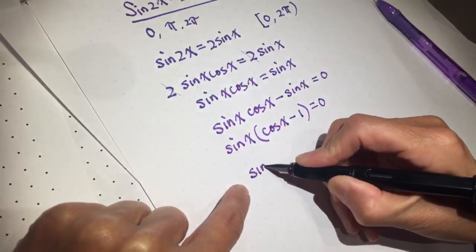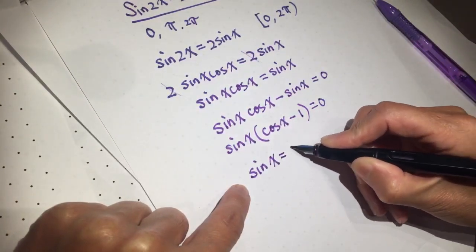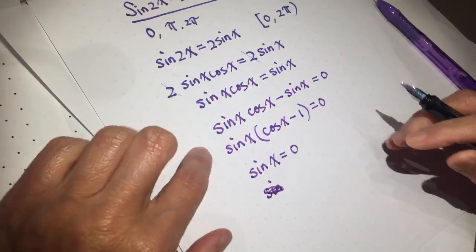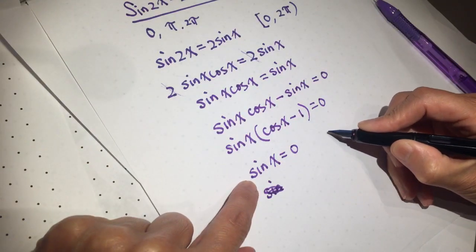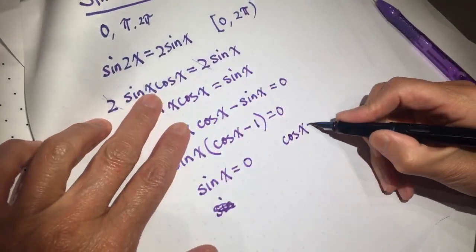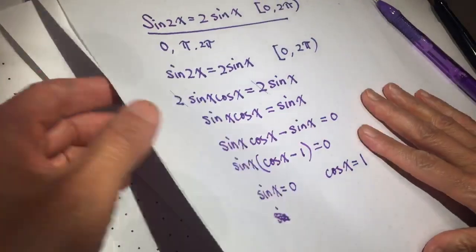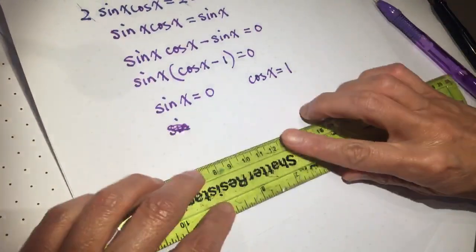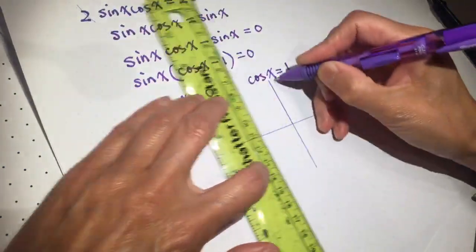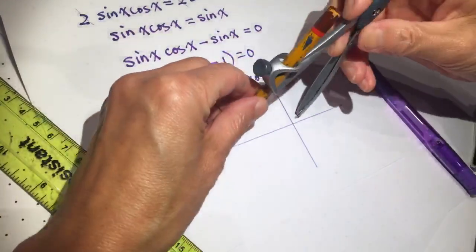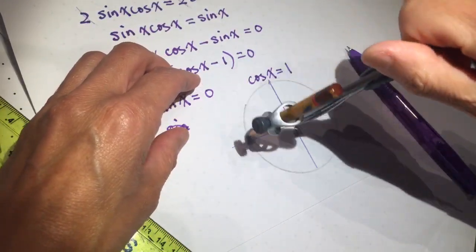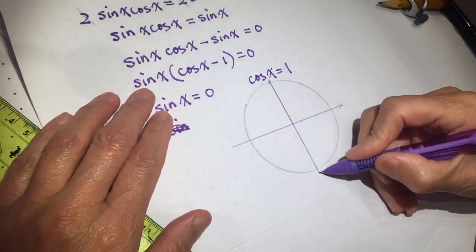So possibility one, sin(x) = 0. Another possibility is cos(x) = 1. Now this is the time we draw a unit circle. Here we can bravely draw a unit circle. Here is a unit circle.